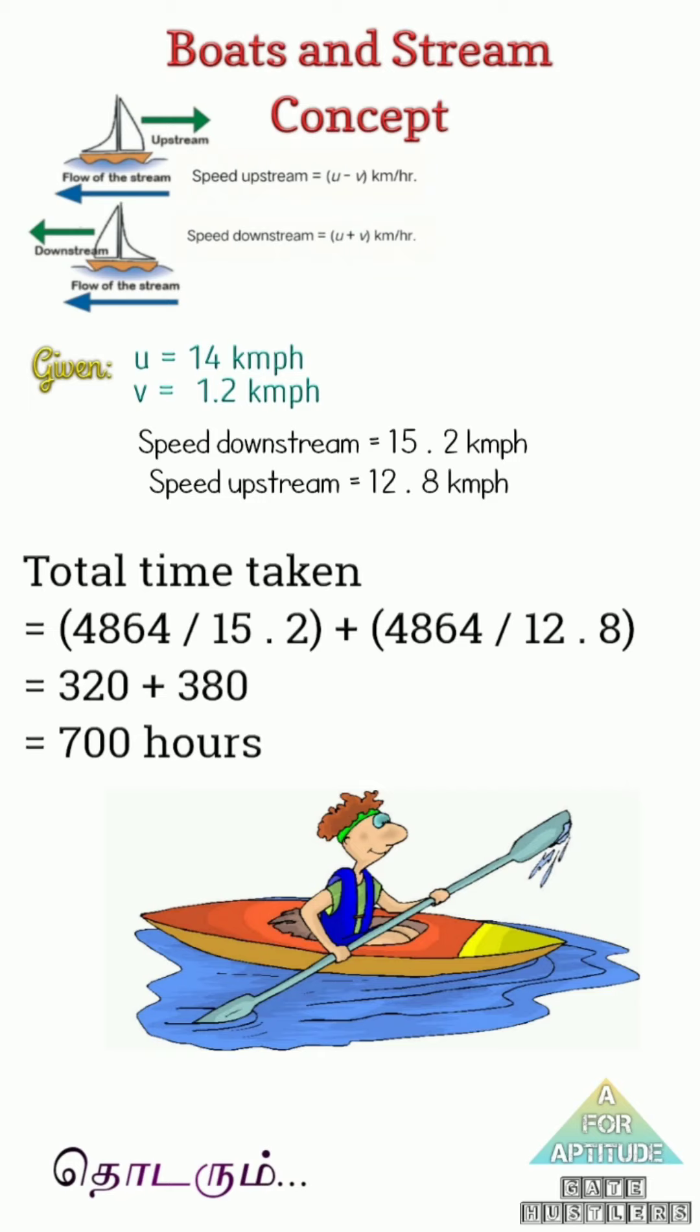Speed upstream level and downstream level. Divide and add to the answer. So 4864 divided by 15.2 - downstream, along the direction. Then 4864 divided by 12.8 - opposite, upstream.